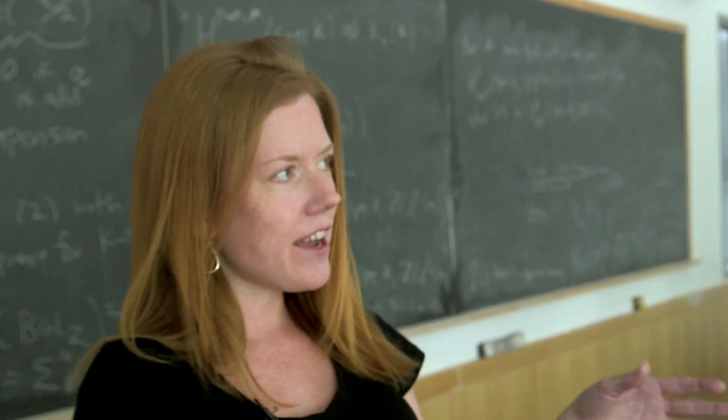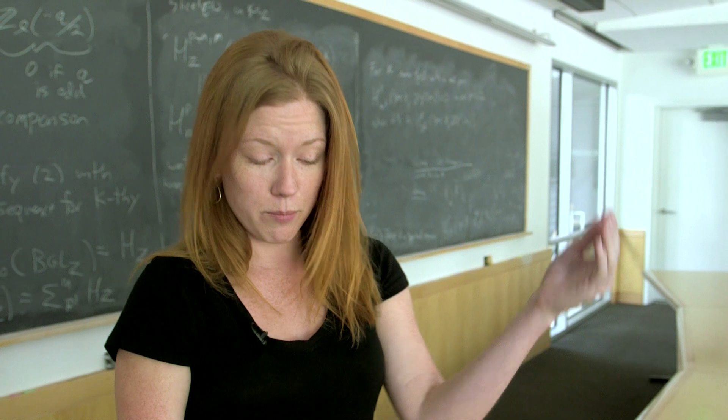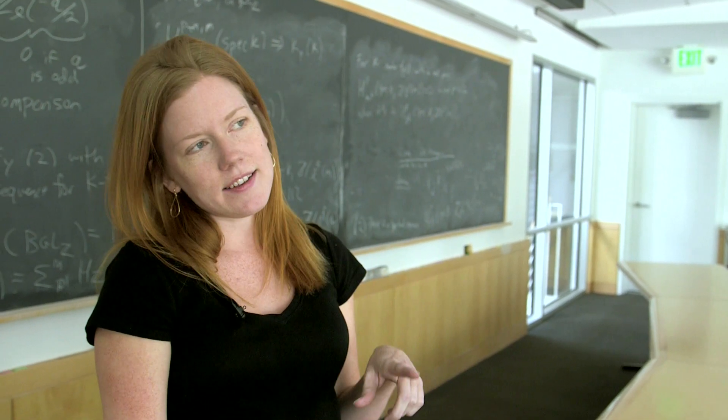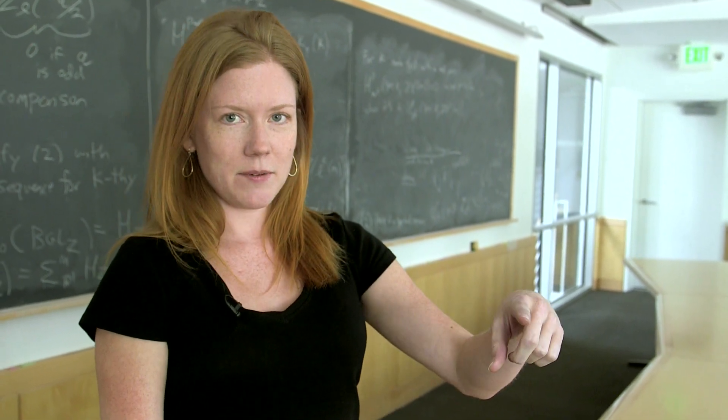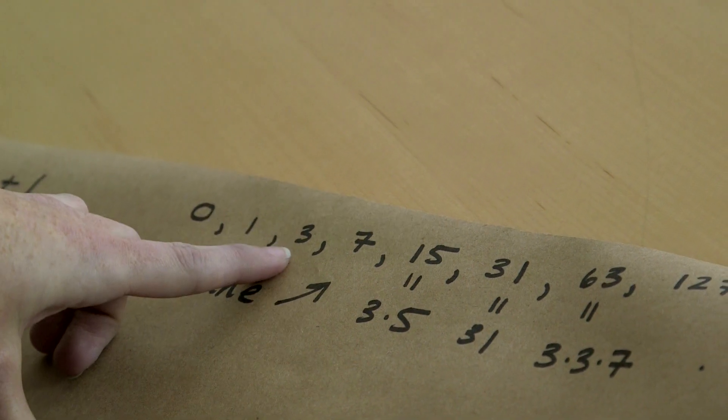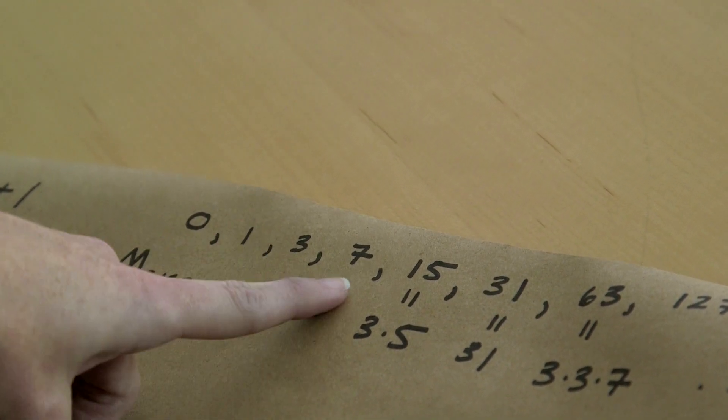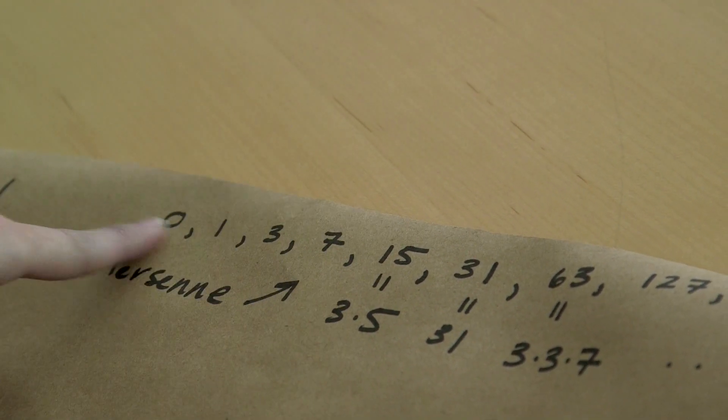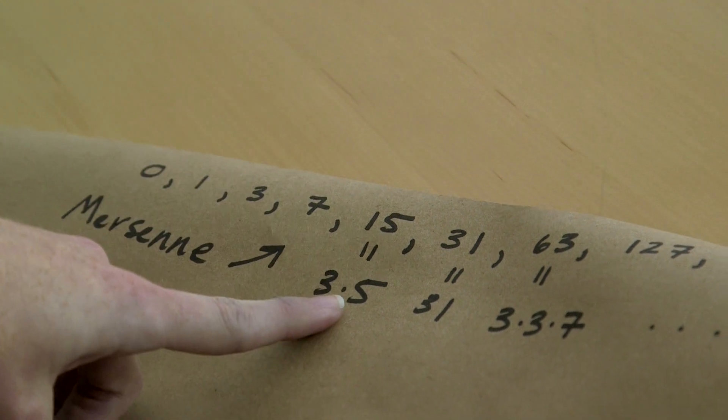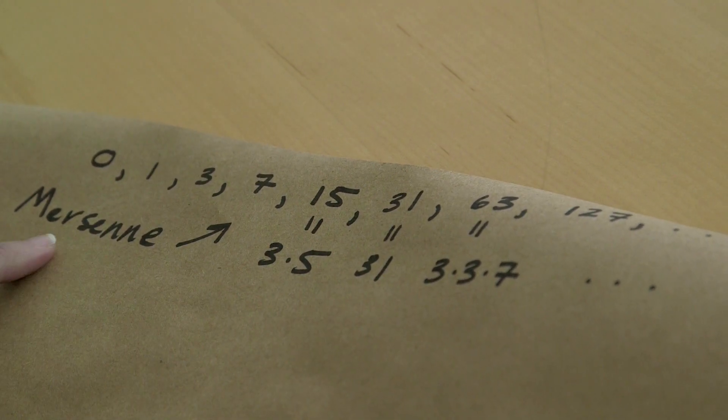And so instead of asking, do we have infinitely many elements in this sequence which are prime, we could at least ask, as we go along in the sequence, do we get a new prime at each step? So that's the question I'm interested in answering. So here we don't have any prime divisors, but here, 3 is a prime divisor that never appeared before. Here, 7 is a prime divisor that never appeared before. Here, 5 never appeared. 31 never appeared.